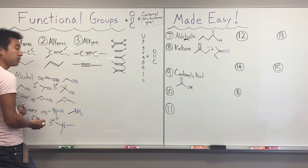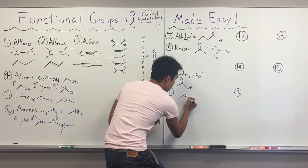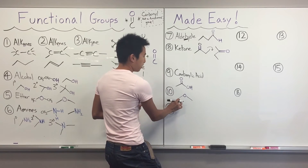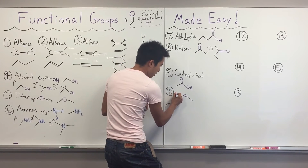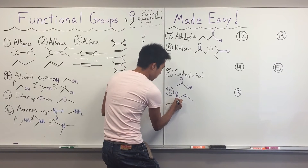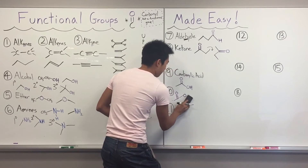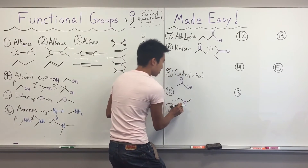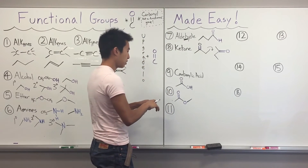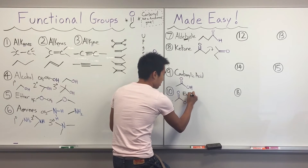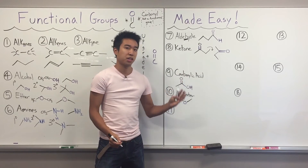Now let's upgrade the ether. Bring your ether over — oxygen with carbons on either side. Upgrade one of those carbons with a carbonyl and give that carbon an extra carbon as well. That gives you an ester. Esters are ethers with a carbonyl upgraded onto them.